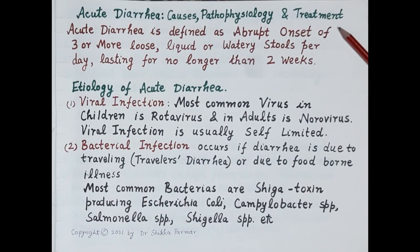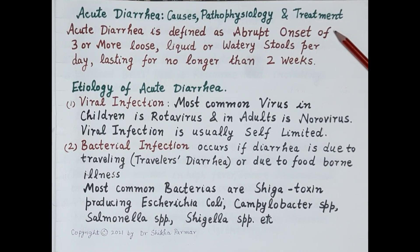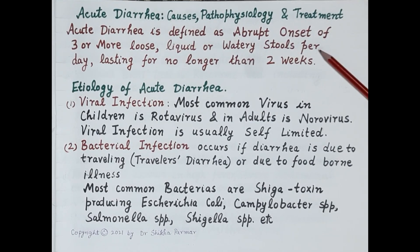Hello students. As we all know, diarrhea is a very common illness — many people suffer from diarrhea more than once in a year. However, most of the time diarrhea is not serious and it is self-limiting, meaning it cures on its own. In today's video we will discuss features of acute diarrhea, its causes, pathophysiology, and treatment.